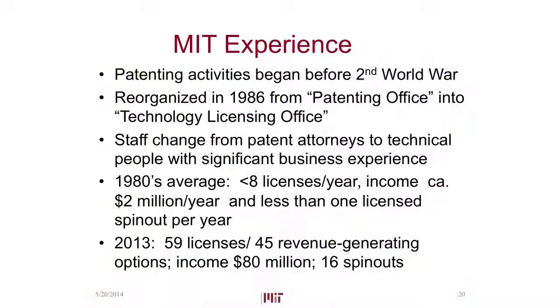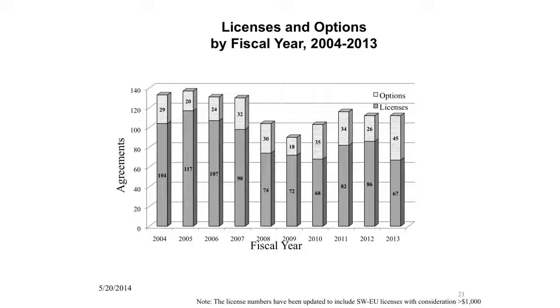MIT has been involved in technology commercialization and patenting going back to the 1930s. We were reorganized in 1986, and our staff are primarily senior people with strong science or engineering backgrounds who spent a decade or two in industry before coming back. We went from about eight licenses a year to now close to a hundred. The number of companies we start goes up and down — it depends a lot on the economy and the optimism of investors.